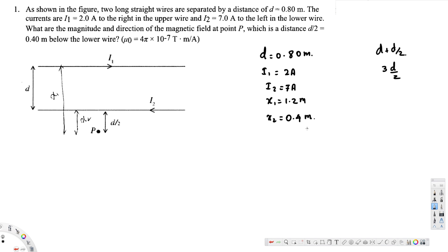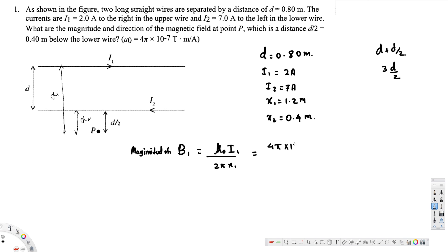Now let's find the magnetic field caused by the top wire. The magnitude of B1 is given by the long straight wire equation: B1 = μ₀·i1 / (2π·x1). Plugging in values: μ₀ = 4π × 10⁻⁷, i1 = 2 ampere, and x1 = 1.2 meter.